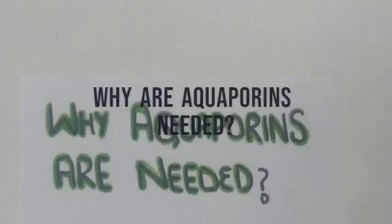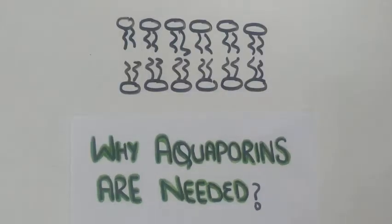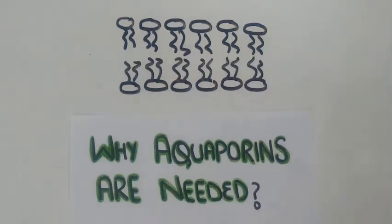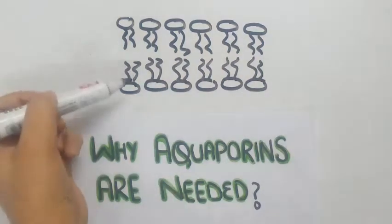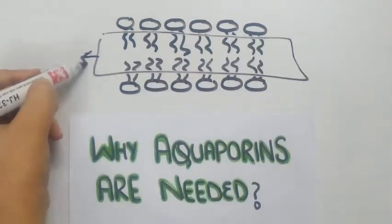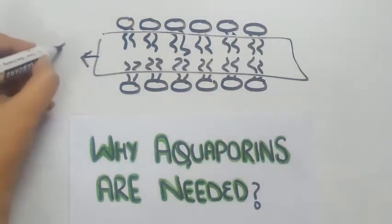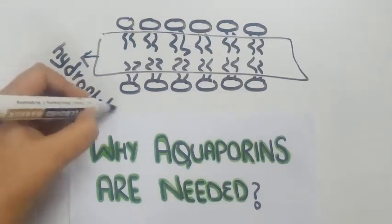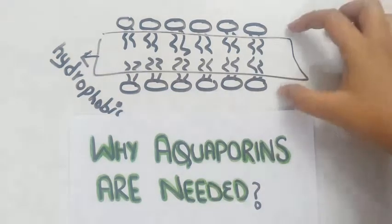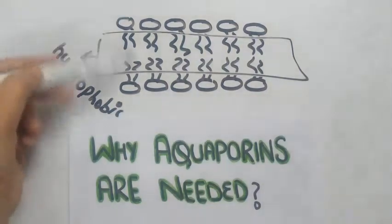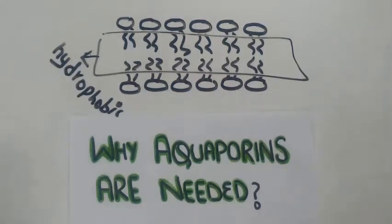Why are aquaporins needed? We know that water molecules can pass through small spaces present between the phospholipids of the lipid bilayer, called interstices. However, the middle part of the lipid bilayer is made up of glycerol, which is organic in nature, making this region hydrophobic. Because of this hydrophobic nature, the transport of water molecules will be very slow and water molecules will face a lot of hindrance while passing through the cell membrane.